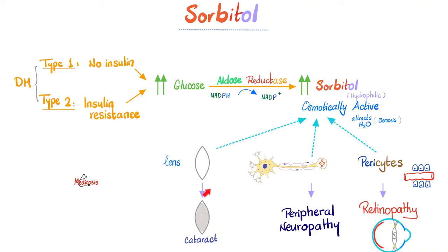Diabetic patients have cataract, they have diabetic peripheral neuropathy — mostly sensory — and diabetic retinopathy. Diabetic retinopathy starts non-proliferative, then becomes proliferative later.